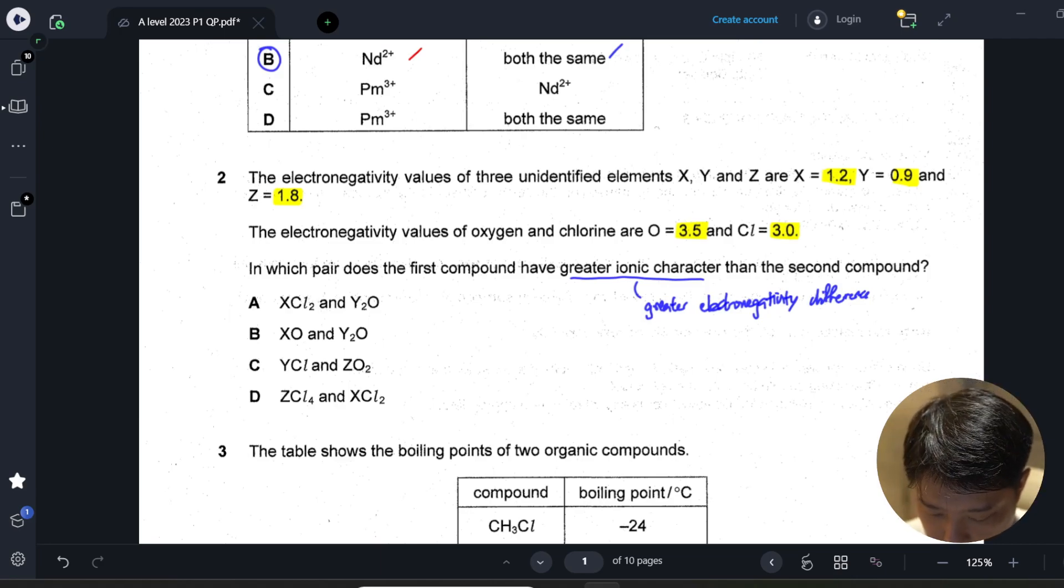If you work out the different pairs, let me write down the difference in electronegativity values. The first one is 1.8, that's the difference, and then 2.6, so nope, it does not have. Second pair is 2.3 and 2.6, also does not have. Third pair is 2.1 and 1.7.